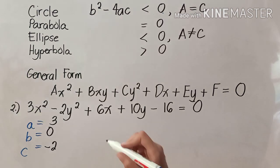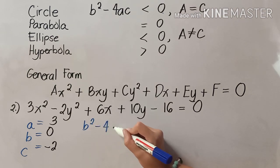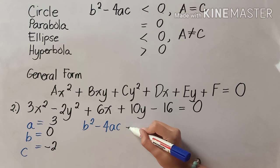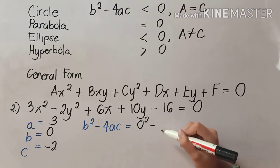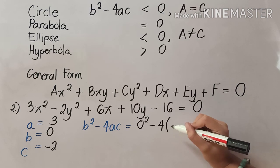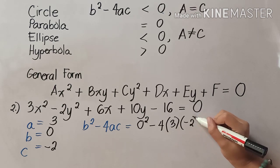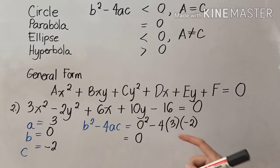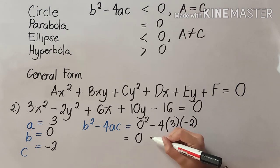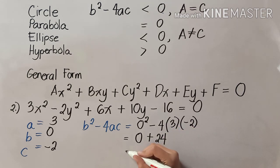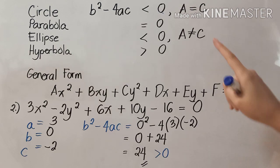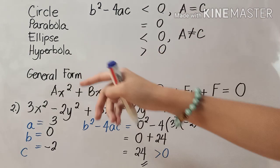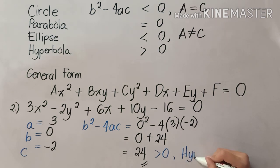We are now ready to compute the determinant b squared minus 4ac. Substituting: b equals 0, so 0 squared minus 4 times 3 times negative 2. We have 0 minus negative 12 times negative 2, giving positive 24. Since 24 is greater than zero, looking at our options, this is an equation of a hyperbola.